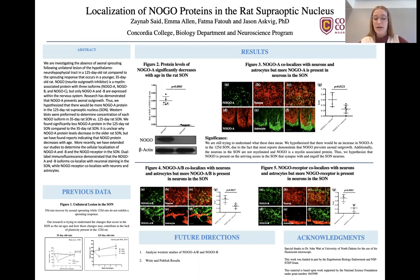axonal sprouting in the 35-day-old rat versus the 125-day-old rat to compensate for that lesion. So what we honed in on this summer was the nogo protein.